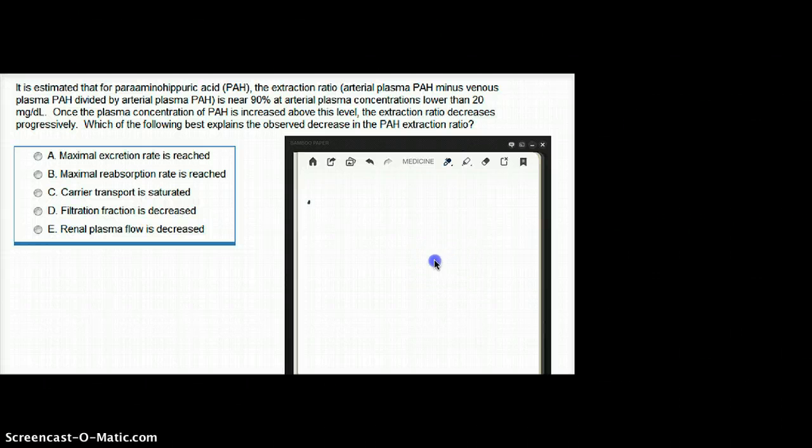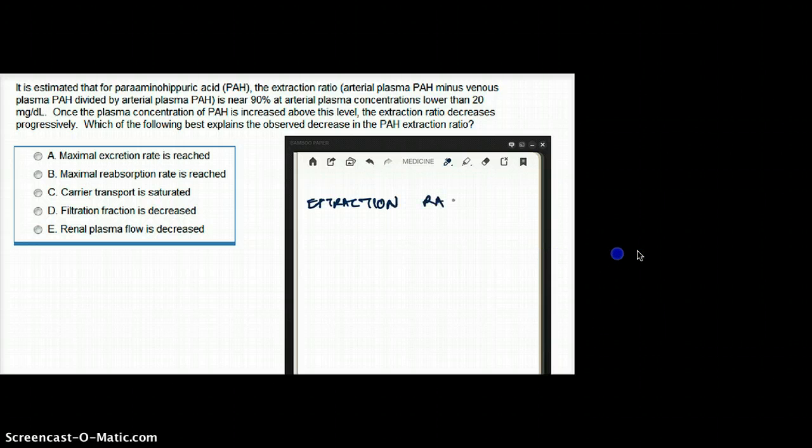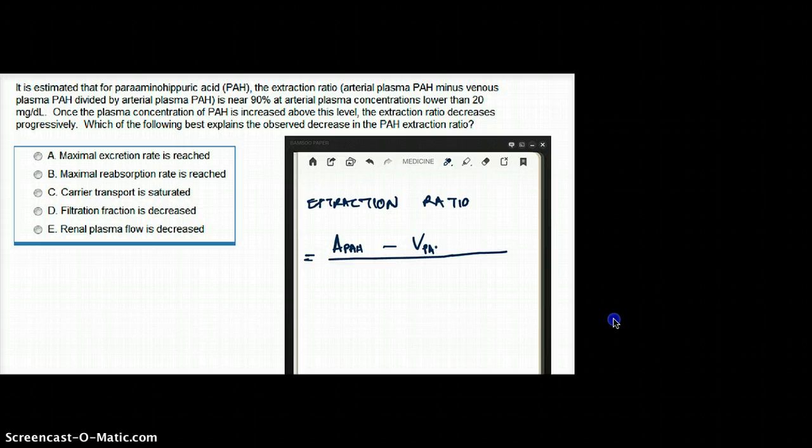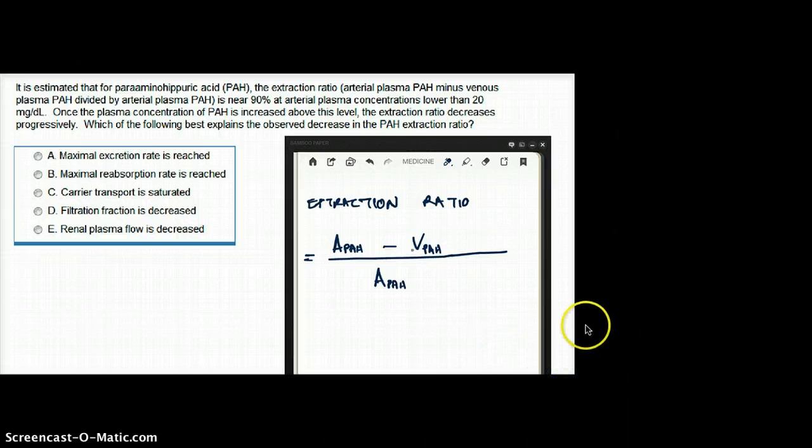So the question says that it is estimated that PAH extraction ratio is equal to arterial plasma PAH minus venous plasma PAH divided by arterial plasma PAH. This is not the equation that we looked at, right? This is something we kind of don't know. They're giving us the equation.